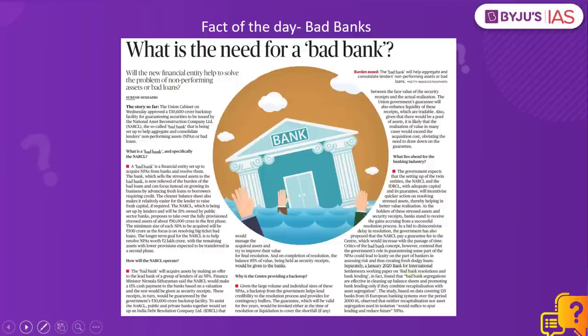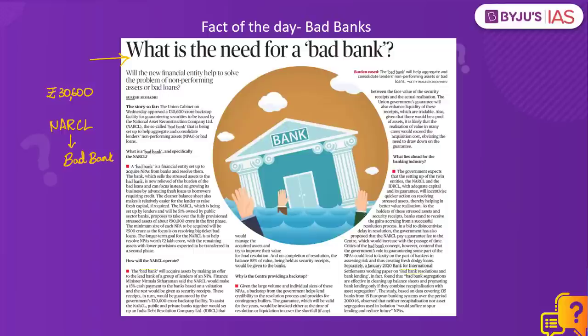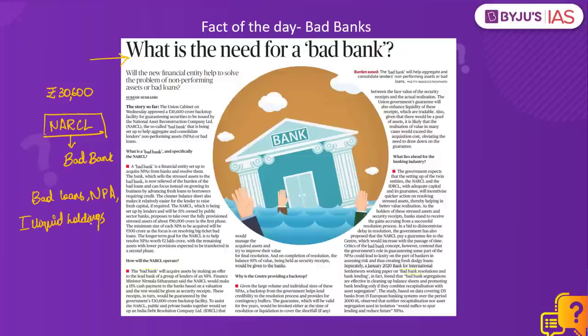The fact of the day is bad banks. There is an article on bad banks in the FAQ section of The Hindu newspaper today. The government has set up two new entities to acquire stressed assets from banks and sell them in the market. The union government has approved a Rs. 30,600 crore facility for guaranteeing securities to be issued by the National Asset Reconstruction Company Limited, which is NARCL — a bad bank. A bad bank is a bank that buys bad loans, non-performing assets, illiquid holdings, and stressed assets of other lenders and financial institutions to help them clear their balance sheets.